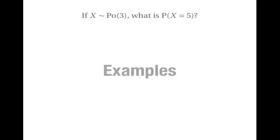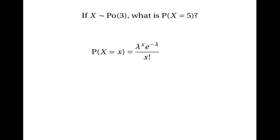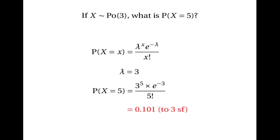Let's look at some examples. If X has the Poisson distribution where 3 is the average number of events, what's the probability of having 5 events? The probability of X events is lambda to the power of X times e to the power of minus lambda over X factorial. Here lambda equals 3, so the probability of having 5 events is 3 to the power of 5 times e to the power of minus 3, divided by 5 factorial. If you work it out, that equals 0.101 to three significant figures.